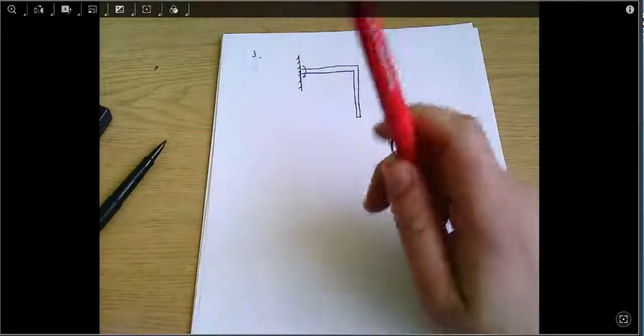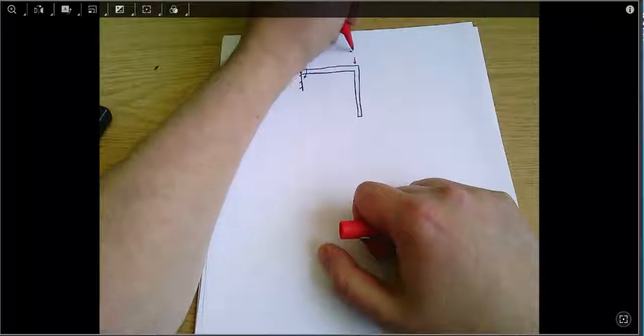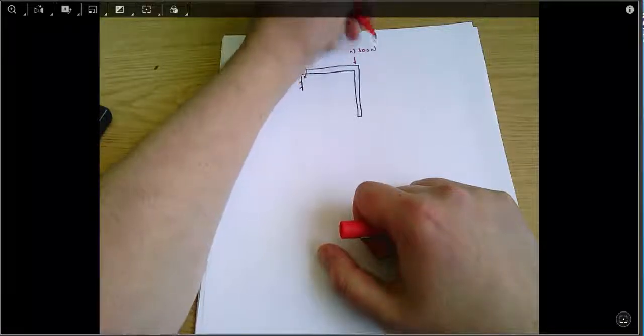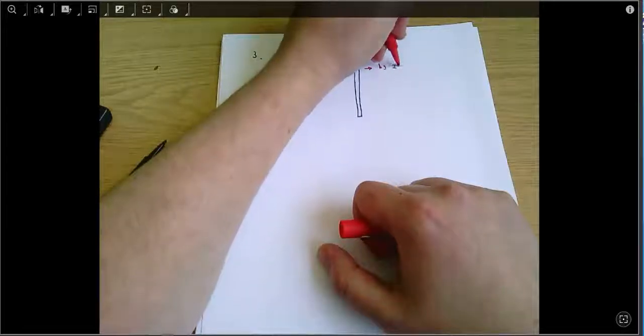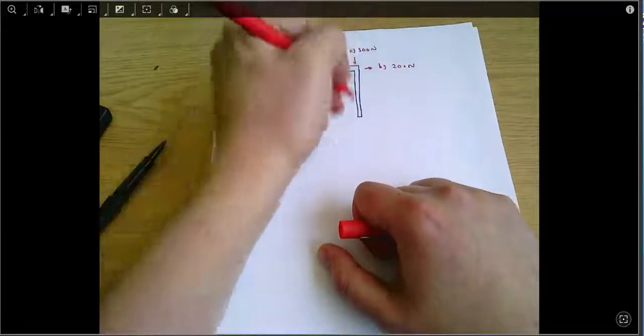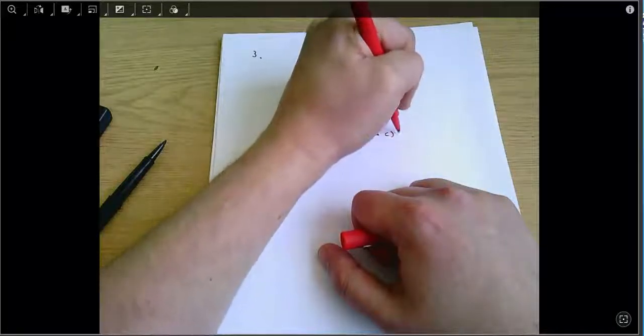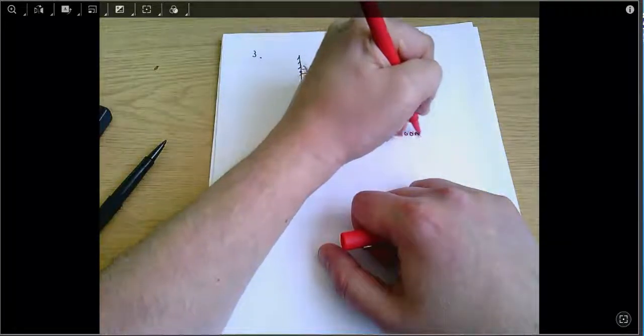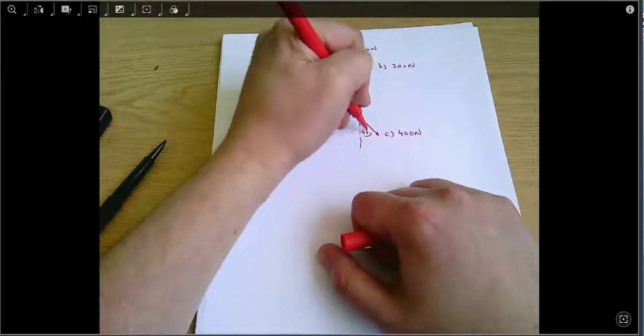They are a 300 Newtons, b 200 Newtons, and c 400 Newtons and c is at an angle of 45 degrees there.